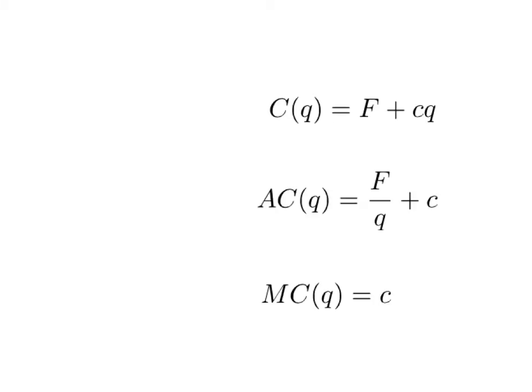Let's look at another simple technology where marginal cost is just given by a constant C. If that constant were seven dollars, it means the extra cost of producing any additional unit — whether it's the first, the second, or the thousand-and-first — is always seven dollars. So marginal cost is constant. Our total cost function has two parts: fixed costs F, plus variable costs C times Q.